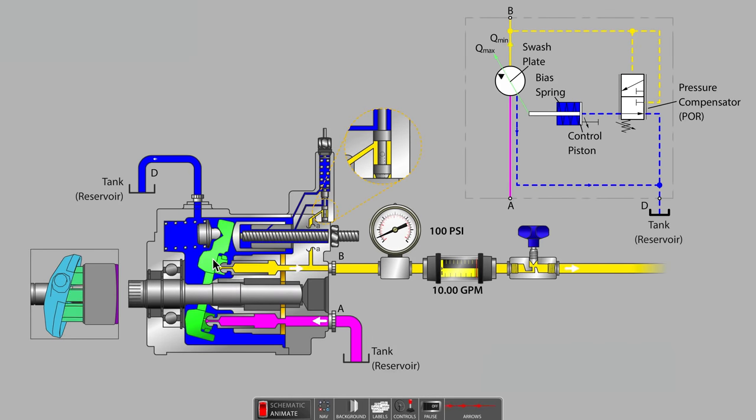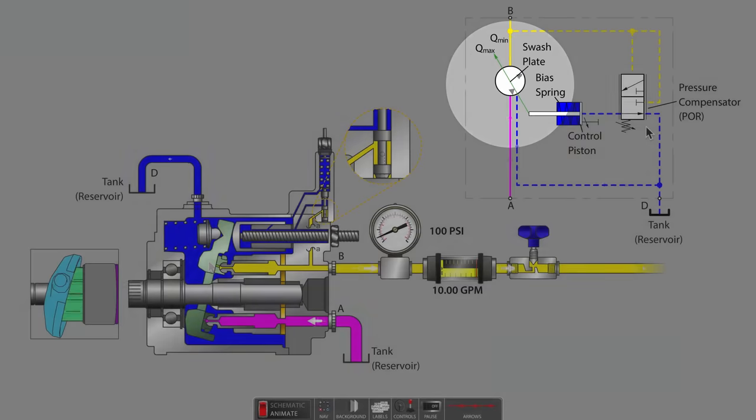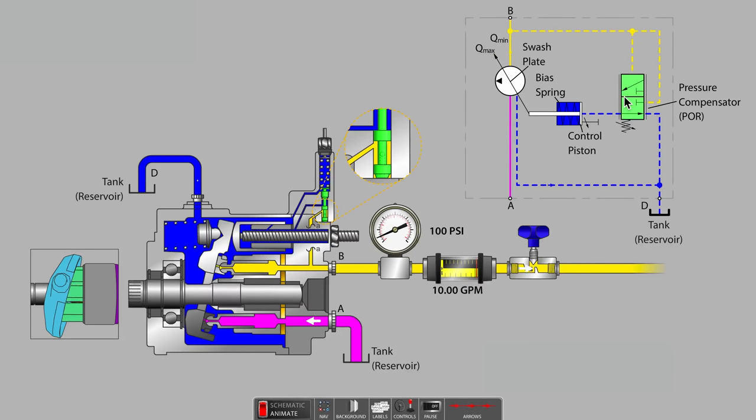When you see the green highlighting appear, don't forget to have a look at the matching symbol in the upper right-hand corner of the screen. Other typical names for pressure compensator are pressure override and pressure cutoff. All of these terms describe a feature that may allow us to go without a relief valve as is commonly found mounted to a T-fitting on the outlet line of a fixed displacement pump.